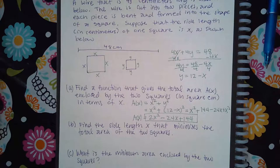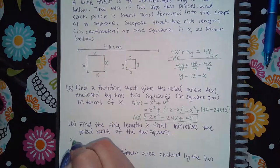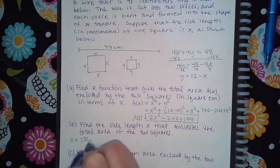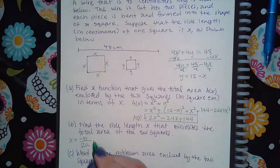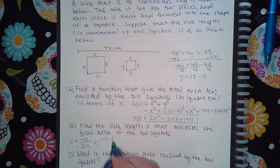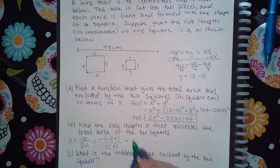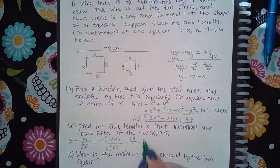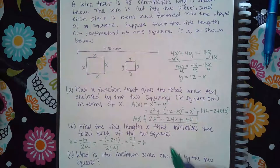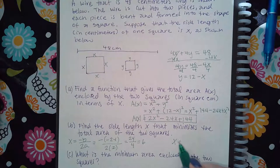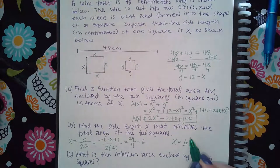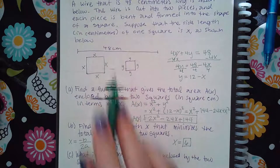Now find the side length x that minimizes total area. Whether minimizing or maximizing, use x = −b/(2a). Here b = −24 and a = 2, so x = −(−24) / (2 × 2) = 24 / 4 = 6. So x = 6 centimeters.